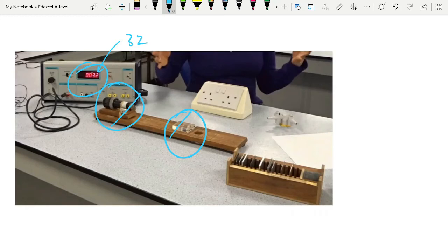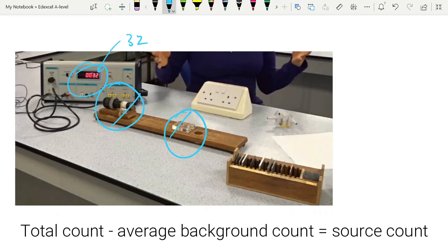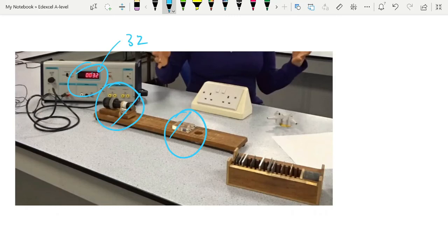The idea being the count that you get on your counter minus the background is equal to the count from the source. You have to be careful with the words that you use here. There's a count which is normally done per minute. So you'd have 32 being your total count; if your background is 5, then 28 is your count due to the source. But often we see count rate given.